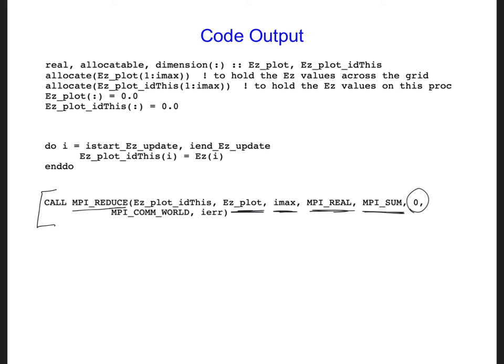We're going to combine them on processor 0. Note that all the processors must read this line for this MPI_reduce call to work. We can't just have processor 0 read it, for example, or else the code will never finish running because processor 0 will be expecting values and the other processors won't be sending processor 0 values if they don't read this call.